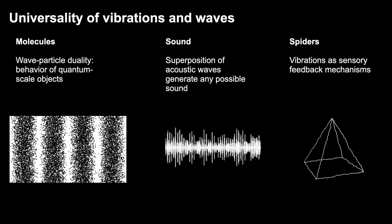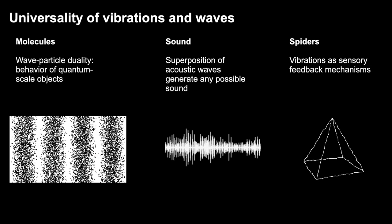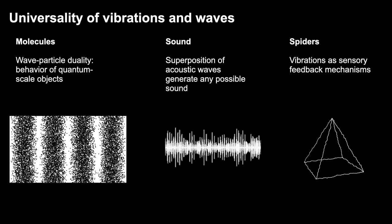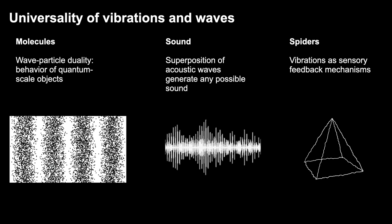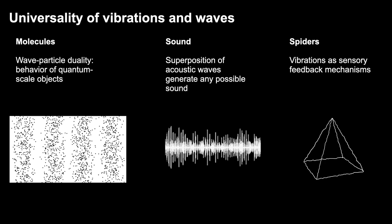One very interesting unifying theme across different manifestations of matter is the equivalence of vibrations, matter, and sound. The universality of waves and vibrations is something we see at the quantum mechanical level, where we can describe matter as collections of waves. Sound is an overlaying of sine waves and harmonic waves to create more complicated sound structures. Spiders, for instance, use waves as a way of communicating and understanding their environment. Waves, sound, and vibrations are universal — and we can use them as a way of defining material models, optimizing materials, and even inventing entirely new materials.